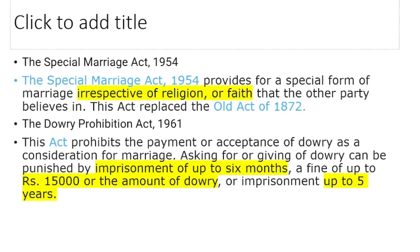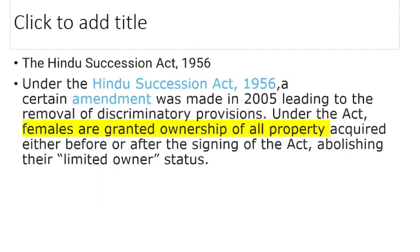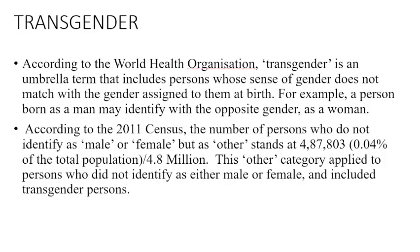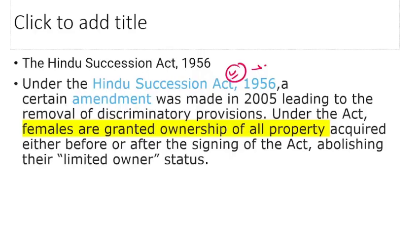Special Marriage Act में inter-religion marriage को promote किया गया था। Dowry Prohibition Act में dowry को prohibit किया गया था और punishments भी mention की गई हैं। Hindu Succession Act — यह हमने family, marriage chapter में in detail पढ़ा हुआ है।